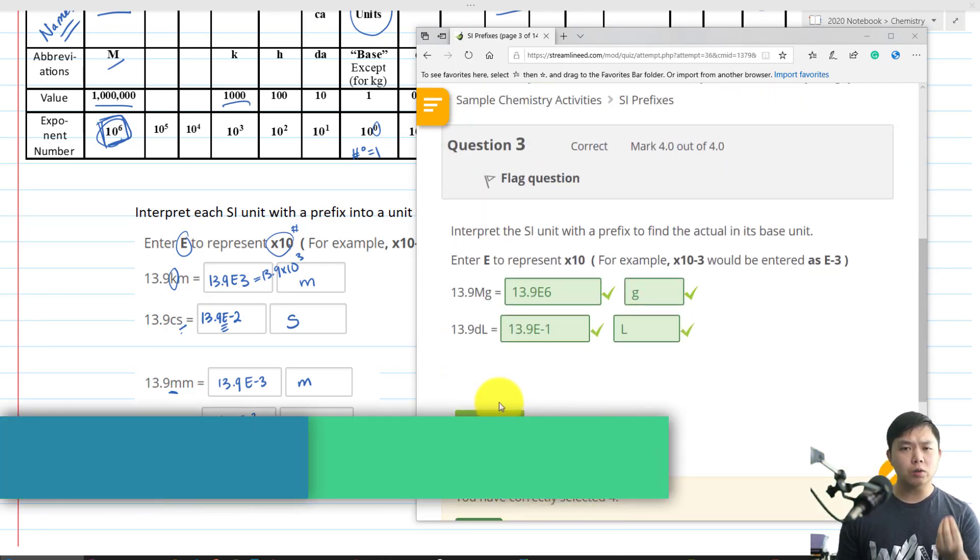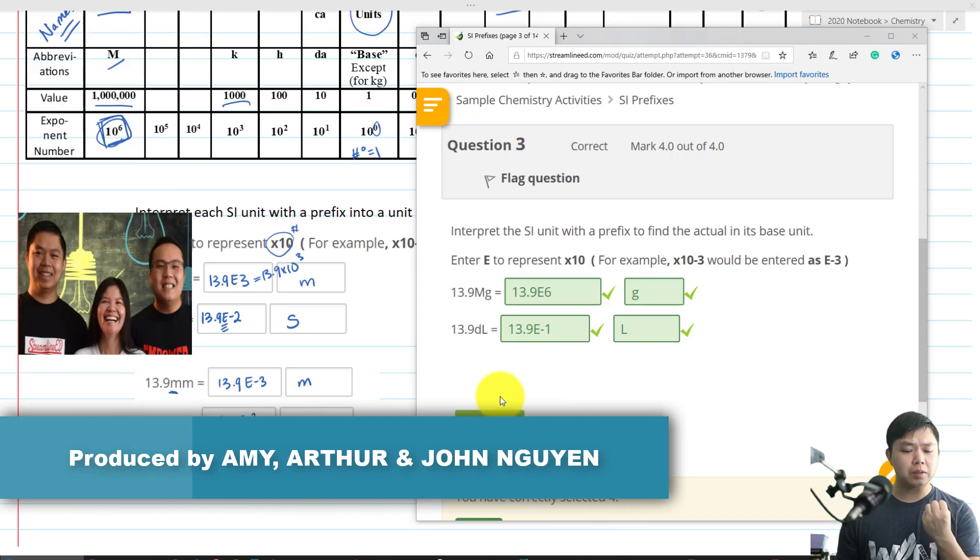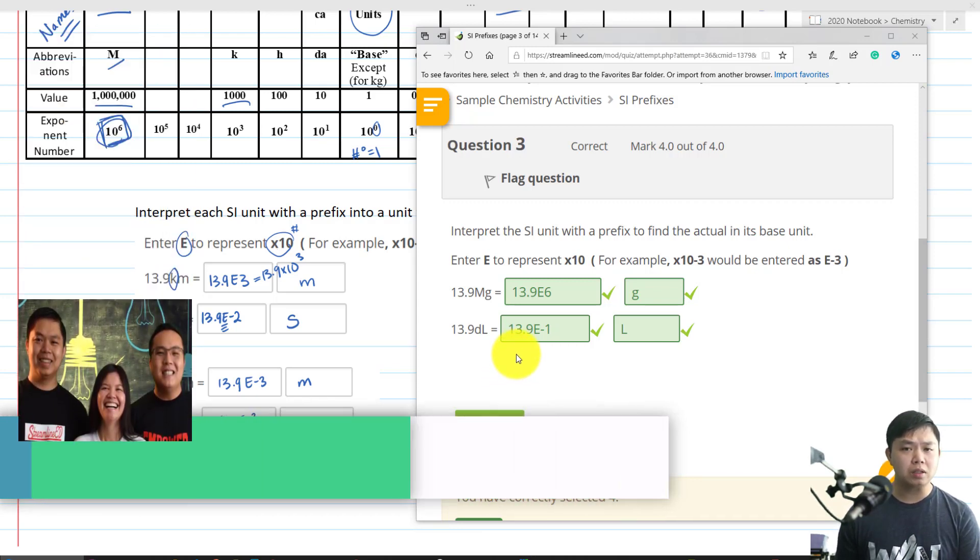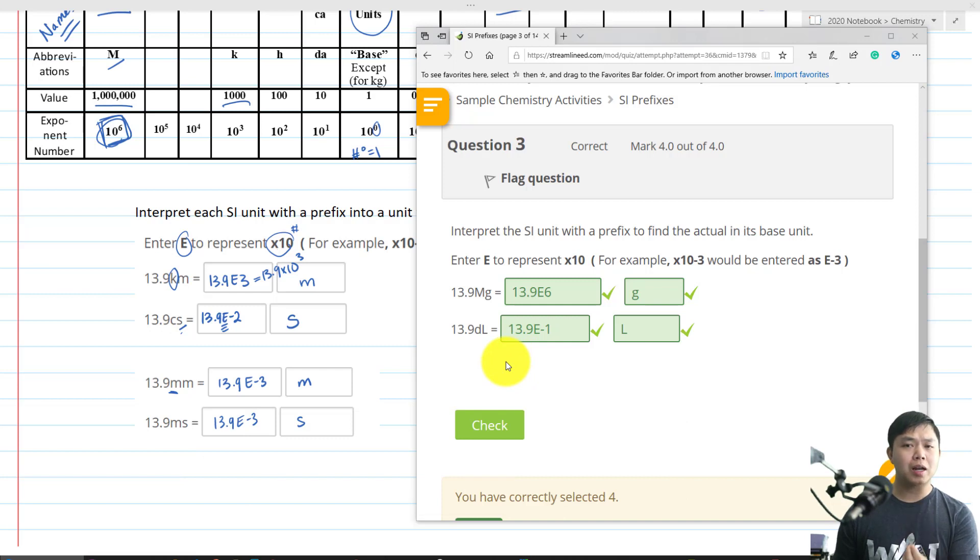So go ahead and continue to do some more practice problems until you actually memorize all the prefixes and knowing how to apply those prefixes in order to understand that each prefix represents a particular value that used to measure the same property of matter at different sizes. And that's it for SI prefixes.